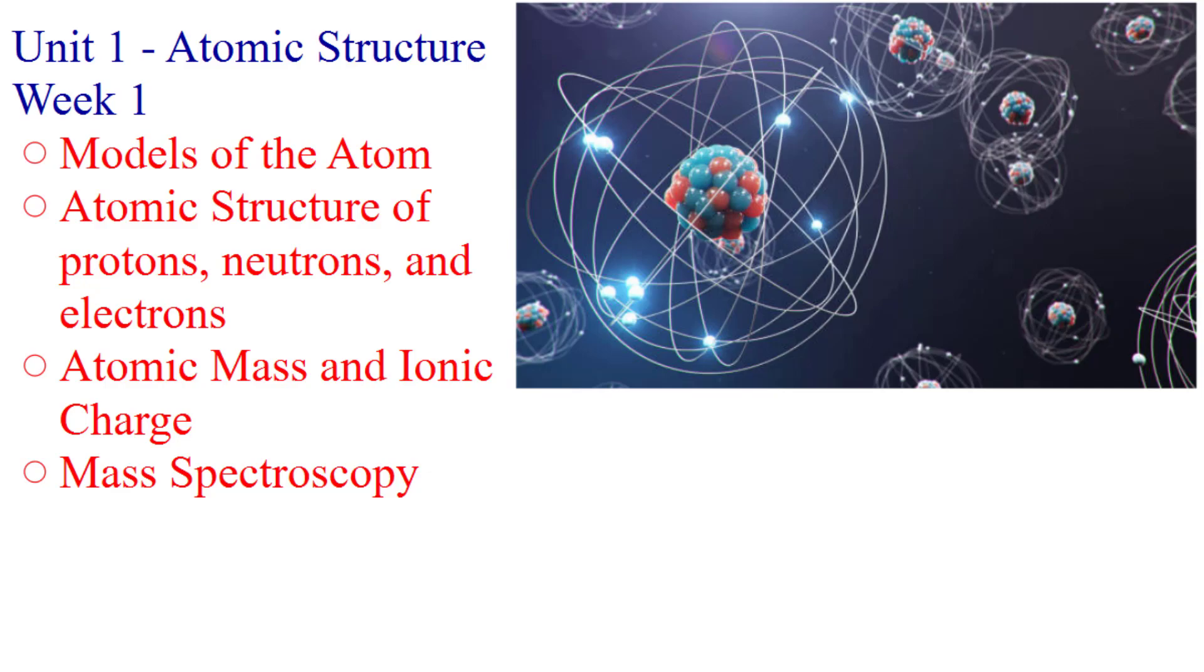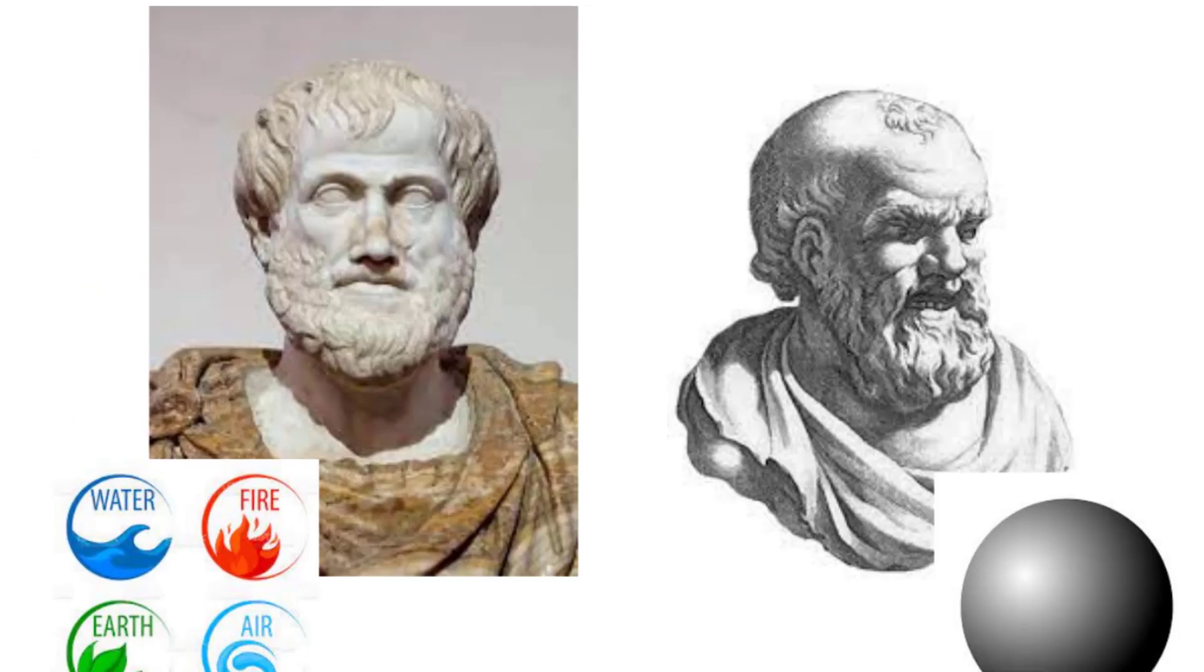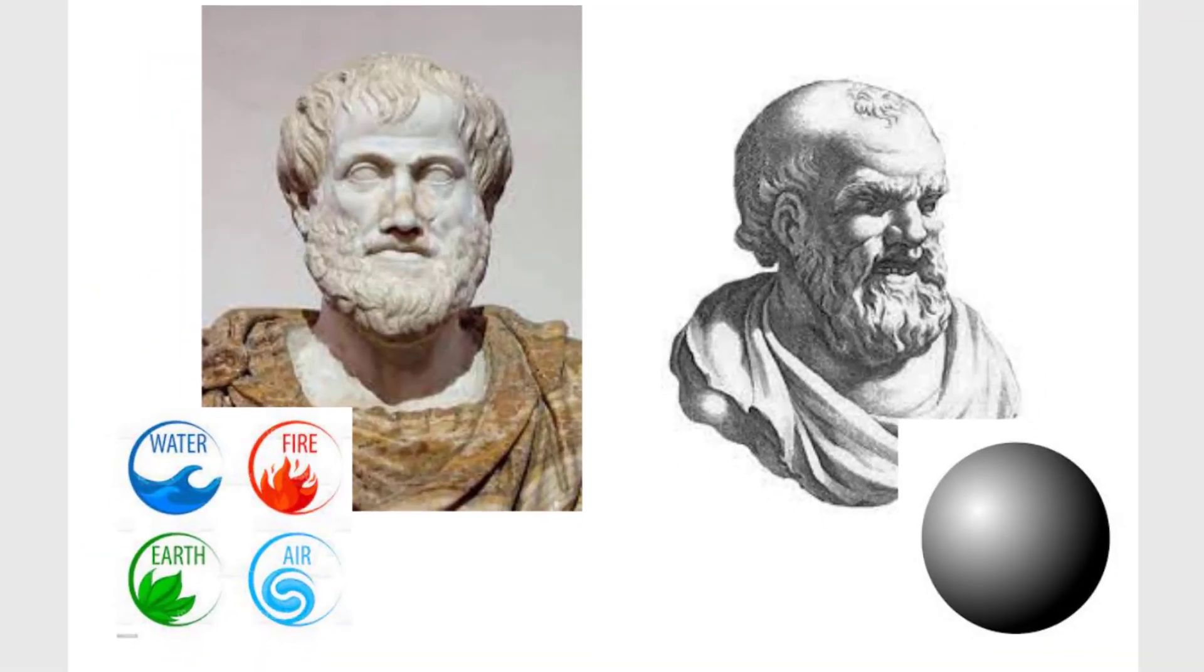So let's get started with this Unit 1 Atomic Structure and models of the atom. The models of the atom goes back to about 400, 500 B.C., and you can see there's two old dead Greek dudes, both philosophers. One's name was Aristotle on the left. One's name is Democritus on the right. Aristotle came up with his model of the elements, or what everything is made up of, which was water, fire, earth, and air.